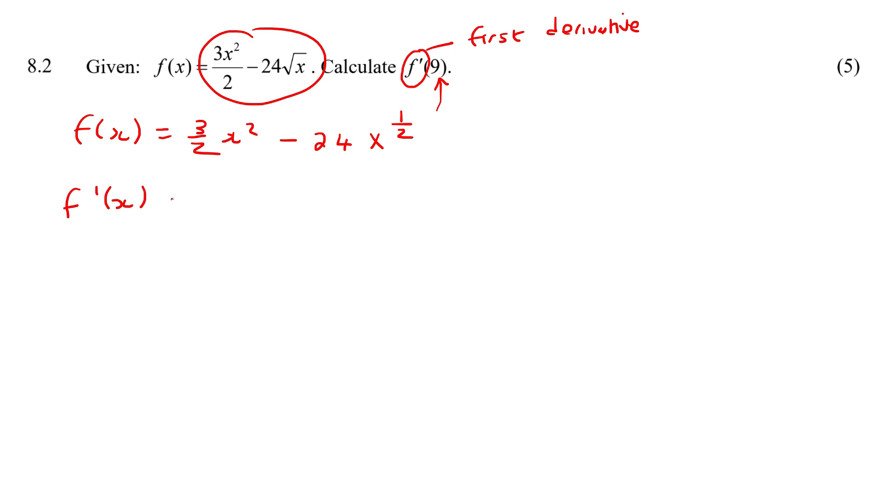Now we can take the first derivative very easy. We're just going to take the 2, multiply it with the number in the front, that'll give you 3. And then you're going to subtract 1. Then you're going to move on to the next part where you're going to multiply this with the number in the front, that'll give you 12. And then you're just going to subtract 1 from here, which will be negative 1 half.